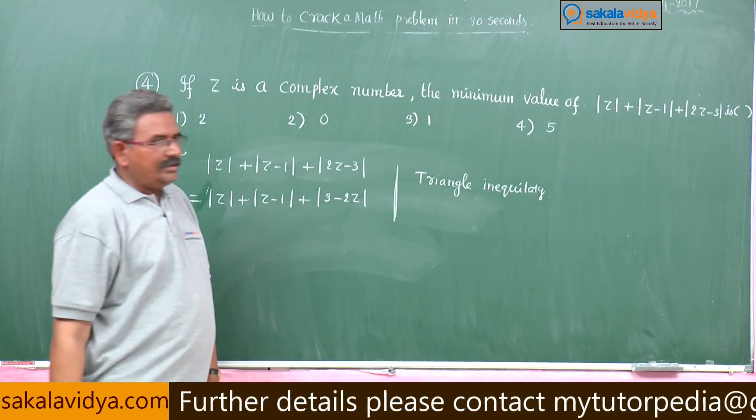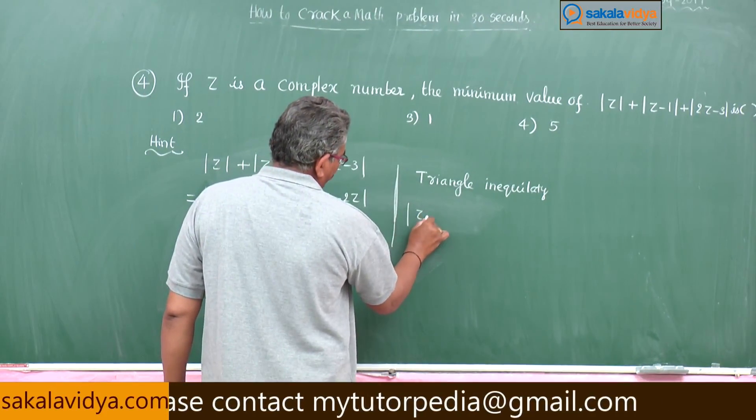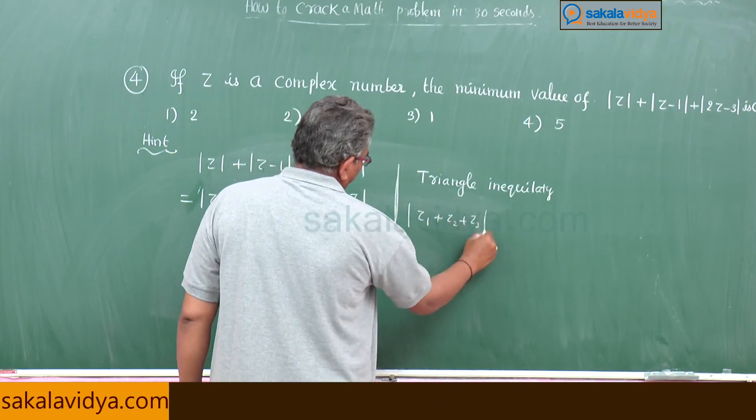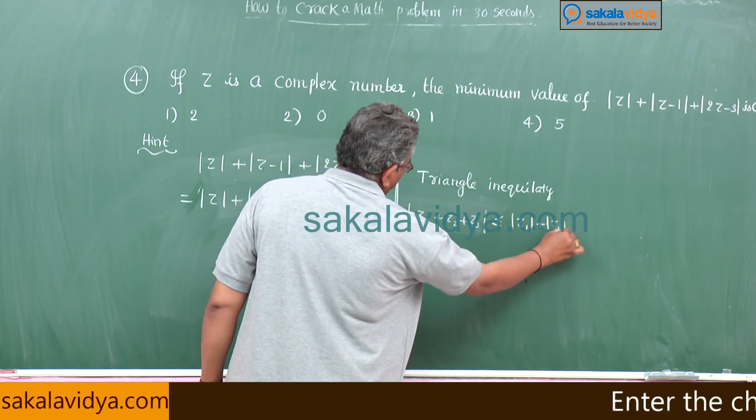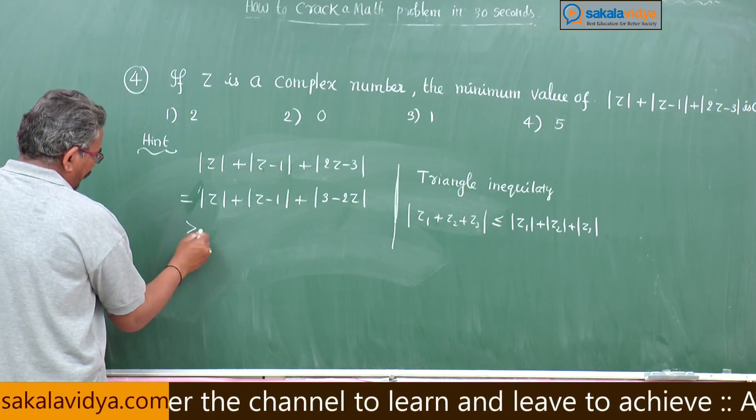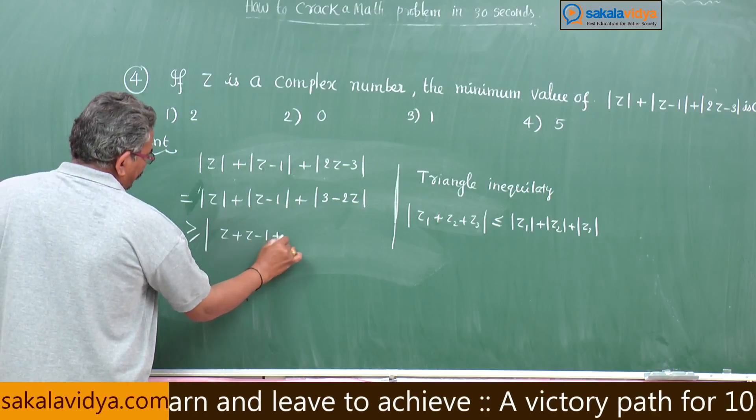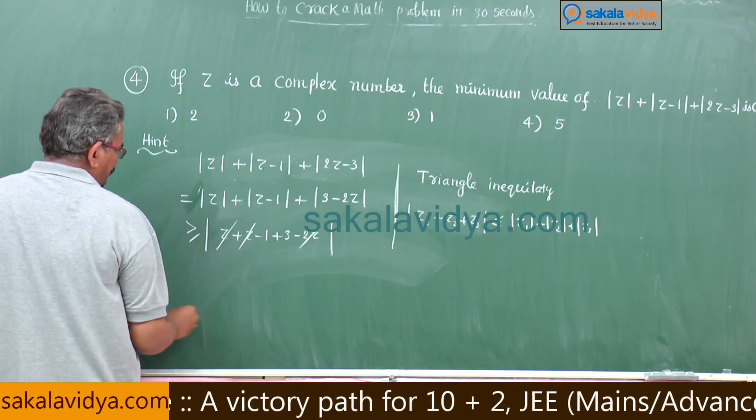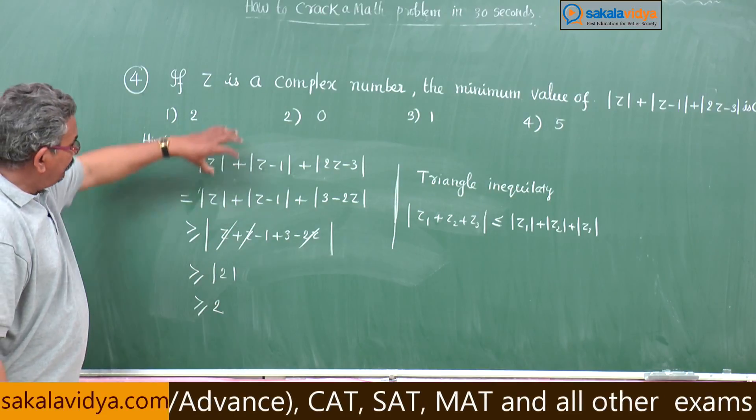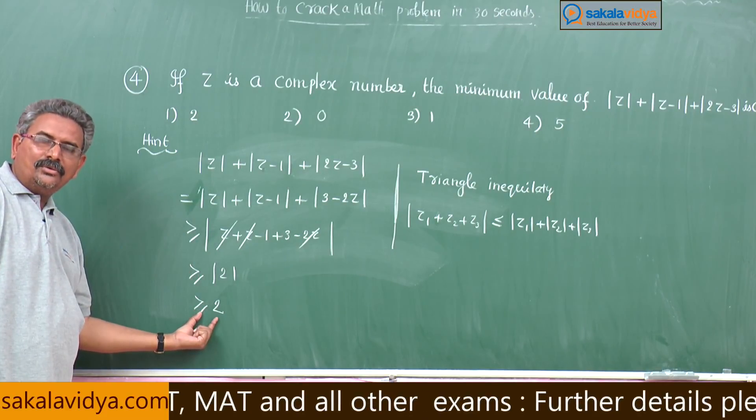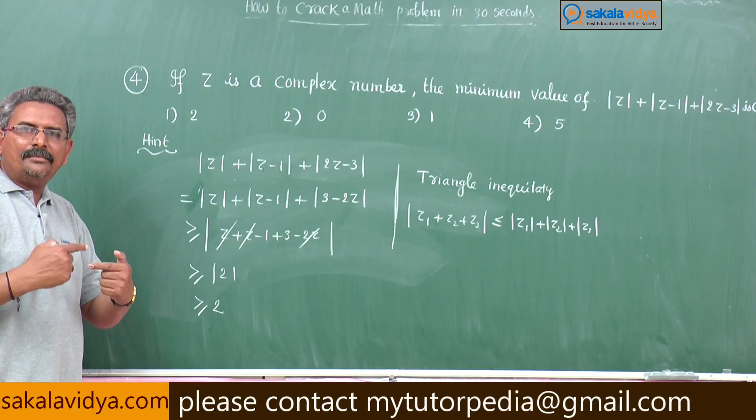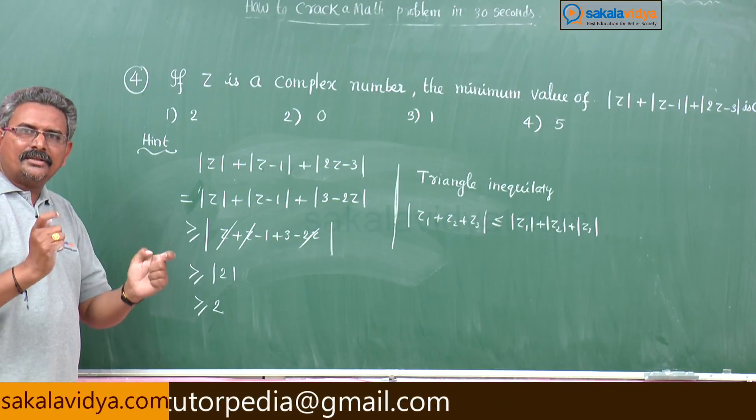Now using triangle inequality property. Triangle inequality: mod z1 plus z2 plus z3 less than or equal to mod z1 plus mod z2 plus mod z3. In reverse order you take it now. This can be written greater than or equal to modulus of z plus z minus 1 plus 3 minus 2z. 2z cancel, greater than or equal to mod 2, greater than or equal to 2. What is meant by this one? The value of this expression is greater than or equal to 2. This expression take the values from 2 to infinity, 2 is included. That is why of all the values, the minimum value will be what? Quite obvious. It is quite obvious that 2 will be the minimum value.